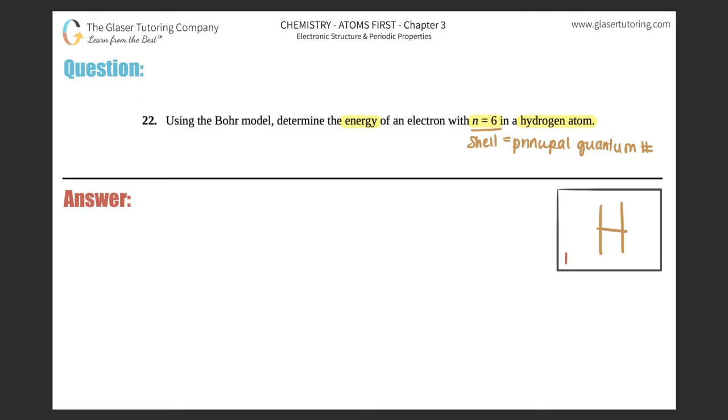So here, we're going to use the formula En equals negative k z squared over n squared because we only have one n value. We only use the other formula with the two n's if we have an electron jump from one shell to another shell. But since this electron is just sitting pretty in n equals six, I will use the equation that only gives me the one n choice.